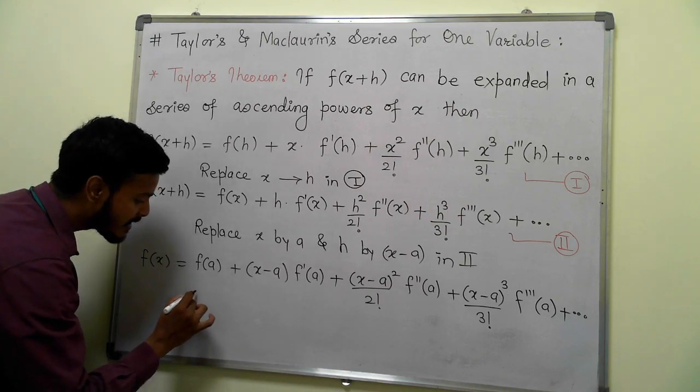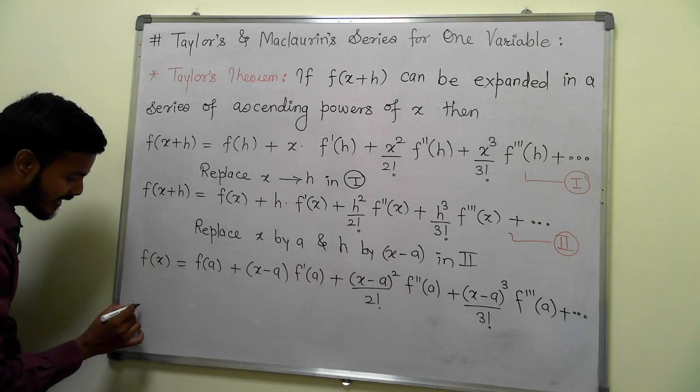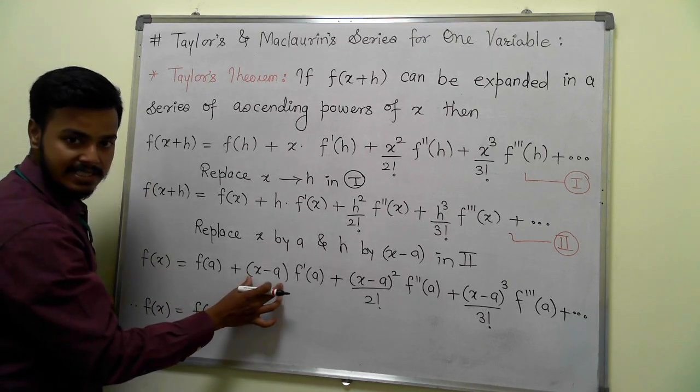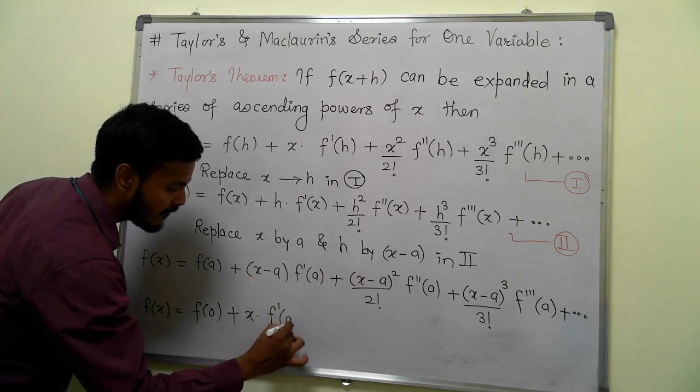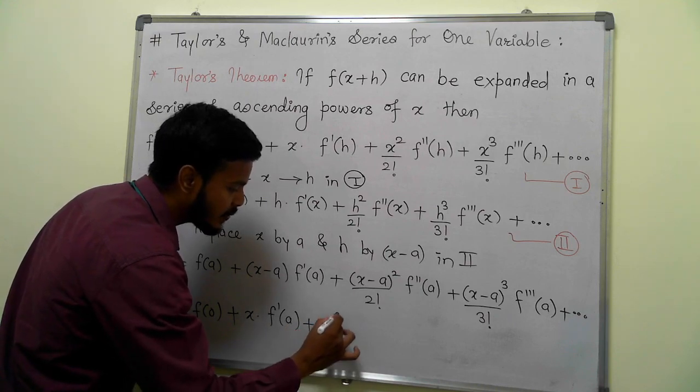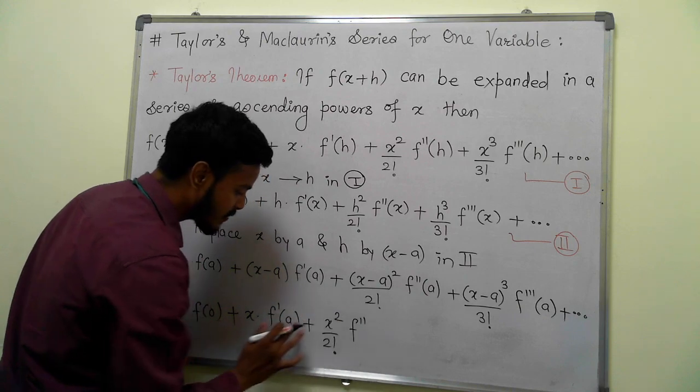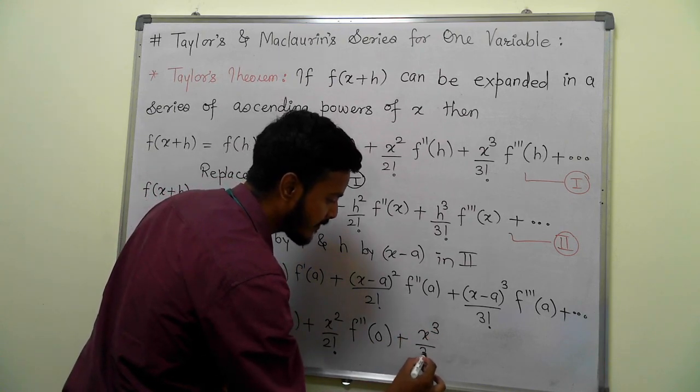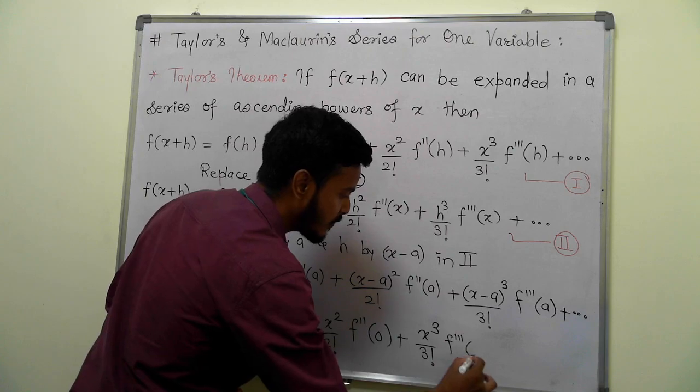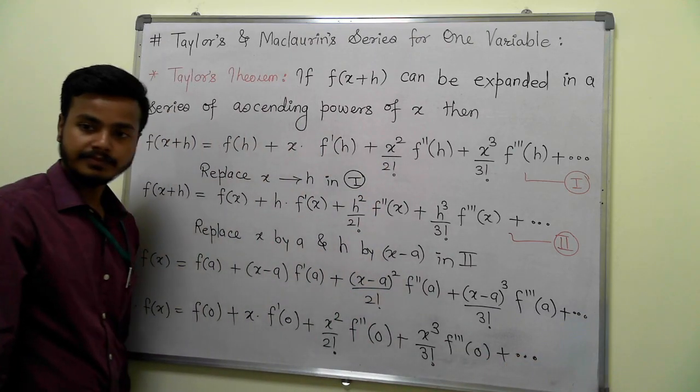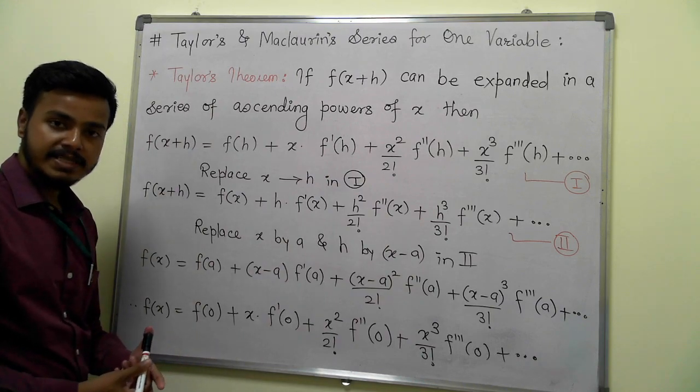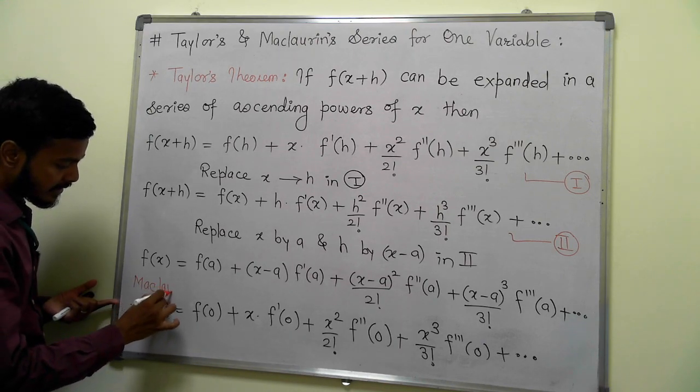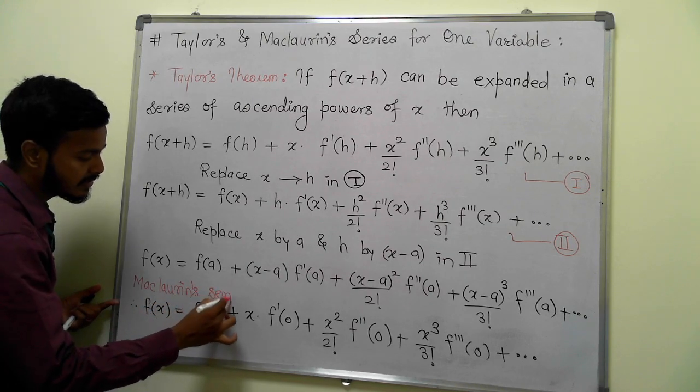Can you help me out in writing down the Maclaurin series? What you need to do? Just replace a by 0. So I will be getting f(x) equals f(0) plus x into f'(0) plus x²/2! f''(0) plus x³/3! f'''(0) plus and so on. What is this? This is actually a special case of Taylor's series and we call it as Maclaurin series.